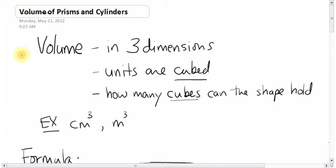Circumference and perimeter, which were in one dimension, finding the distance around an object. Those units were not squared. They were just plain old centimeters or meters or millimeters because they were just in one dimension.